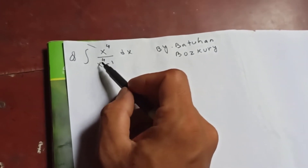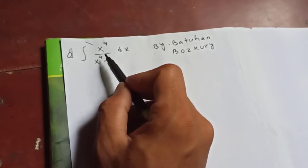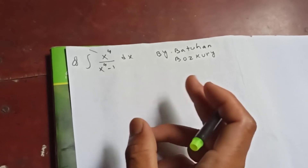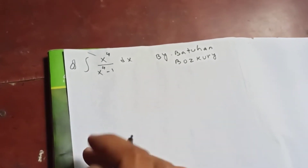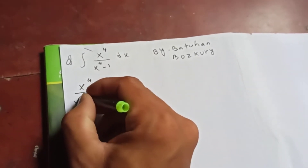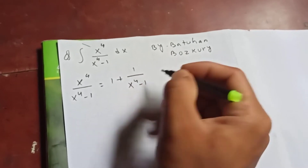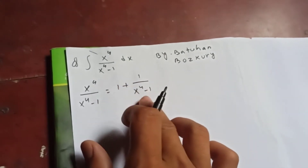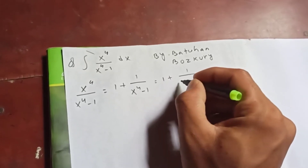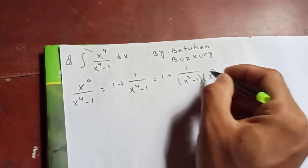If you see this you may wonder how to approach it, but we perform long division. On dividing x to the 4 over x to the 4 minus 1, we simplify to get 1 plus 1 over x to the 4 minus 1. Simplifying further, we can write the denominator as x squared minus 1 times x squared plus 1.